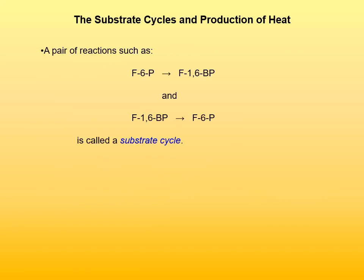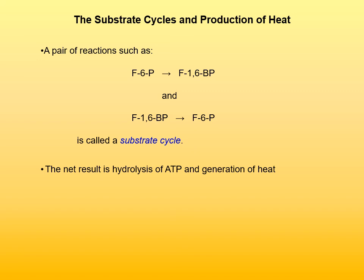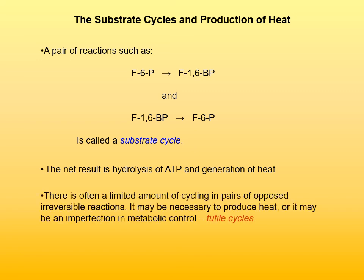A pair of reactions such as phosphorylation of fructose-6-phosphate to fructose-1,6-bisphosphate and the reverse dephosphorylation is called a substrate cycle. If such a substrate cycle were to occur, the net result is hydrolysis of ATP and generation of heat — nothing is produced or degraded; all that happens is that ATP is hydrolyzed and heat is generated. There is often a limited amount of cycling in pairs of opposed irreversible reactions, which is done to produce heat, but it could also be an imperfection of metabolic control — those cycles are called futile cycles.